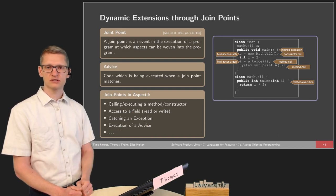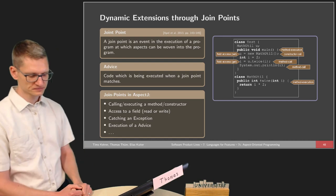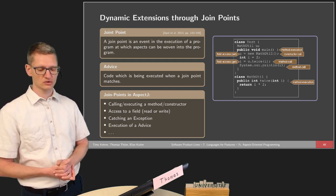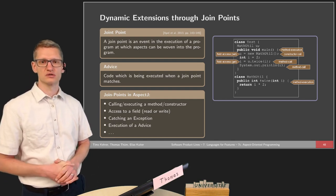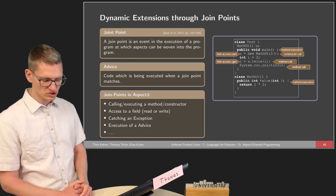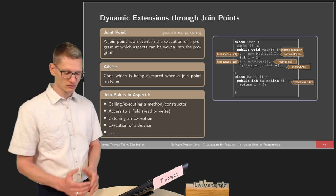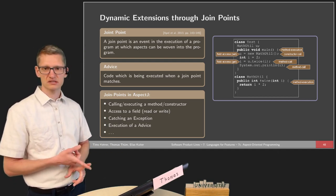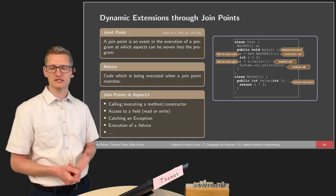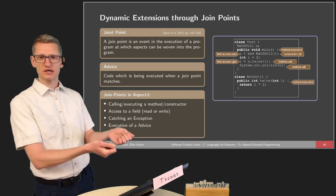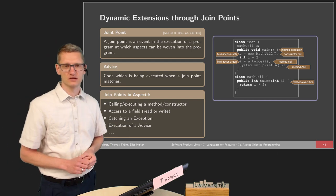At any point in execution we can add some additional code, and sometimes we can replace existing code. The code that is executed at a join point when it occurs during execution is called advice. Join points in AspectJ include: calling or executing a method or constructor, accessing fields with read or write access, catching an exception, and executing advice — so we can even have join points whenever aspect code is executed, allowing other aspects to work with that join point.